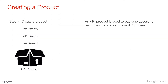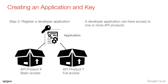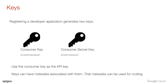The first step is to create an API product — used to package access to resources from one or more API proxies. The next step is to register an application. An API developer can do this in the Apigee Edge management interface, or an application developer might do it through self-service in the developer portal. Once you register that application, you get a consumer key and a secret. We use the consumer key as the API key. If you're doing OAuth, you'd use the consumer key and secret to exchange for a short-lived OAuth token. These keys can have metadata associated with them, and we'll use that metadata for routing.